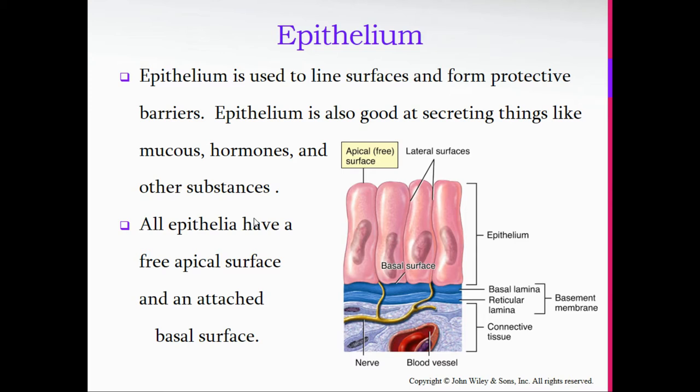Epithelial tissue is used to line surfaces and form protective barriers. This includes your skin, anything exposed to the outside, or anything that is open to a space inside your body — lining the hollow organs, lining the body cavities, the inside of your thoracic or chest cavity, the inside of your abdominal cavity, the lining of the bladder, the inside of your intestines, and so on. All of those areas are covered in epithelial tissue.